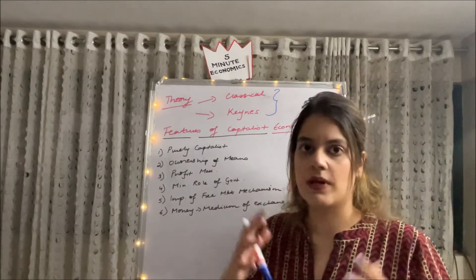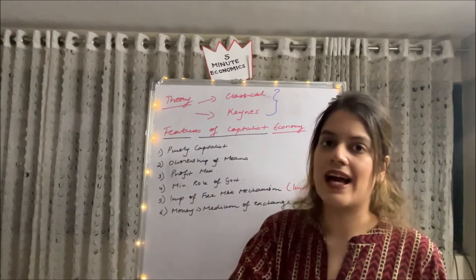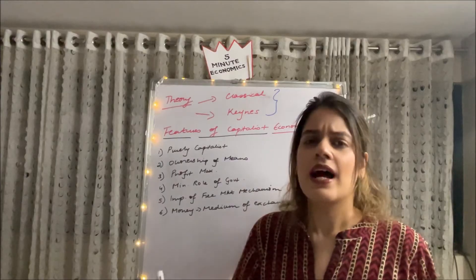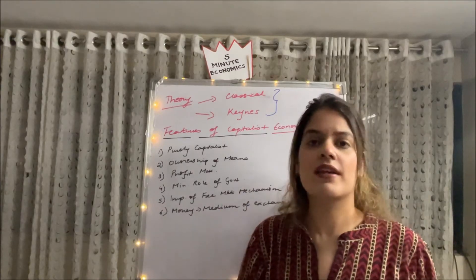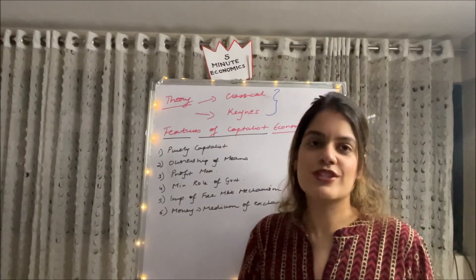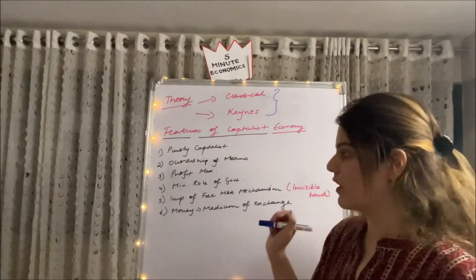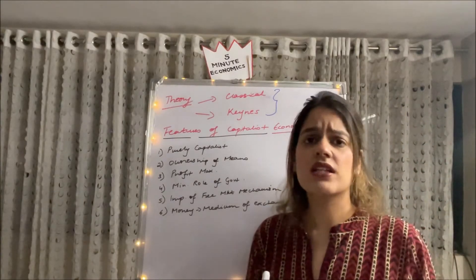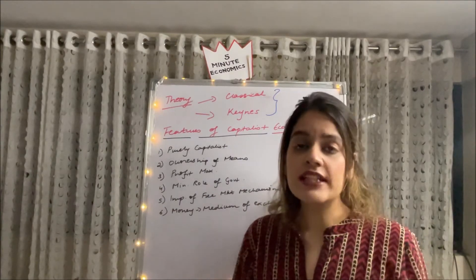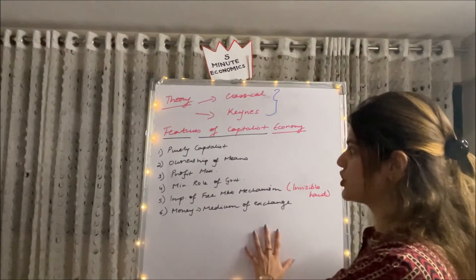Classical theorists said that this economy has an invisible hand — not literally, but the idea is that if the economy is left to itself, market forces of demand and supply will operate and settle any disequilibrium. If there is unemployment, the invisible hand will bring the market back to employment. This was later highly criticized by Keynesian economists. Regarding money, classical economists viewed it only as a medium of exchange for transactions, largely ignoring the speculative motive and store of value.